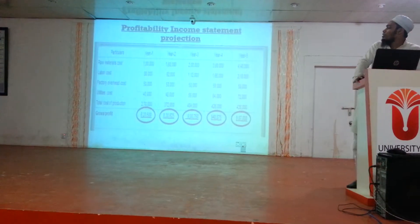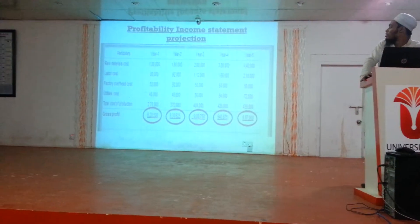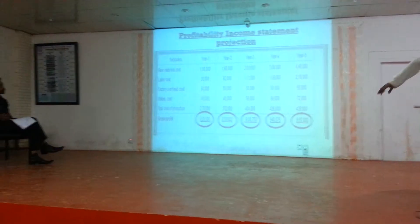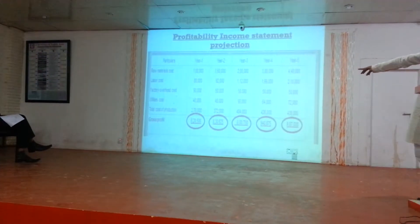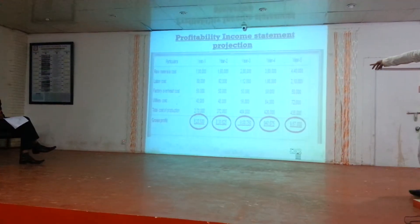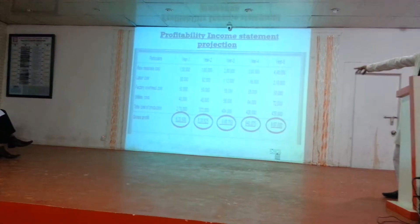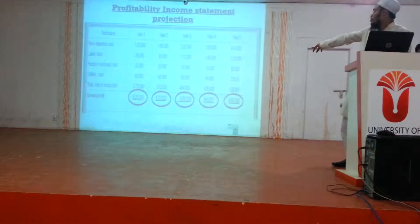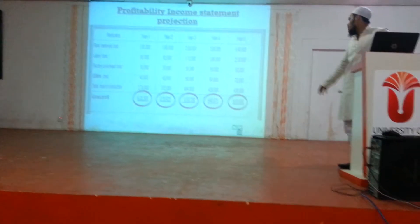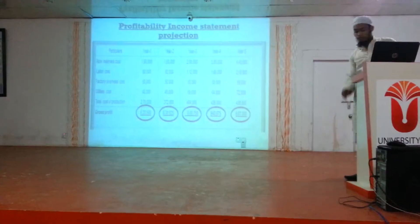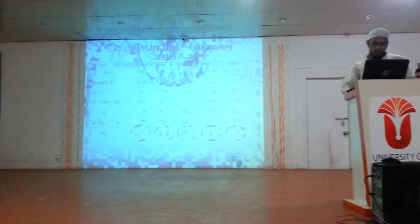This is our profitability income statement. In the first year, our profitability income is 6,255. And this is the second year and the fifth year figures as well.